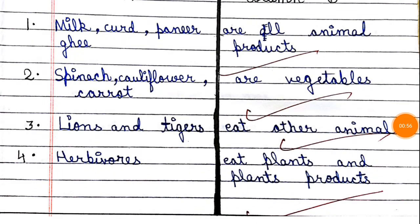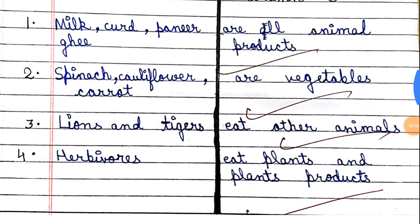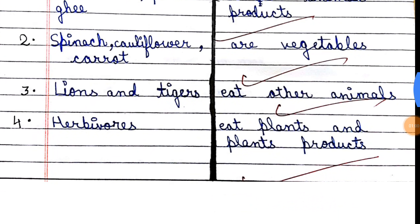Next is lion and tiger. What are they? They are carnivores and they eat other animals.